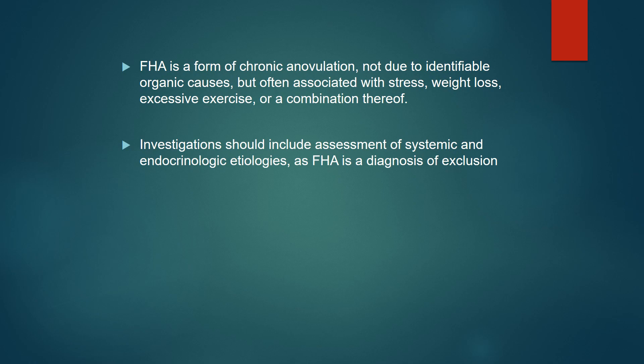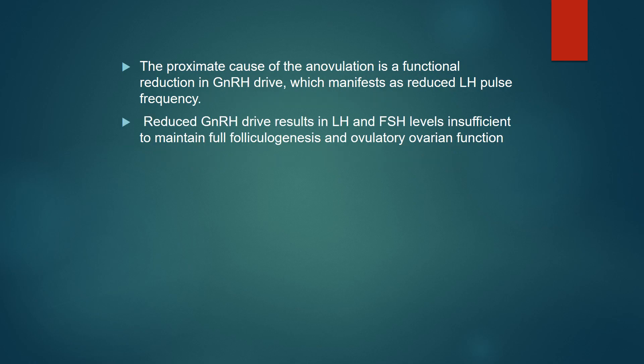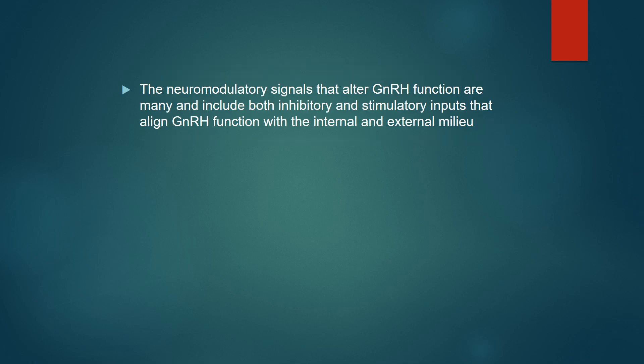Investigation should include assessment of the systemic and endocrine etiologies. The proximate cause of anovulation is a functional reduction in GnRH drive, which manifests as reduced LH pulse frequency. The reduced GnRH drive results in LH and FSH levels insufficient to maintain full folliculogenesis and ovulatory function. The neuromodulation signals that alter GnRH function are many and include both inhibitory and stimulatory impulses that align GnRH function with internal and external cues.